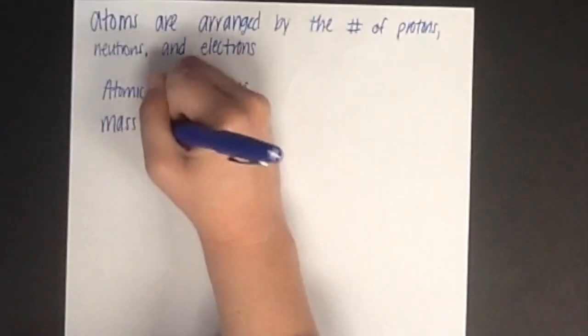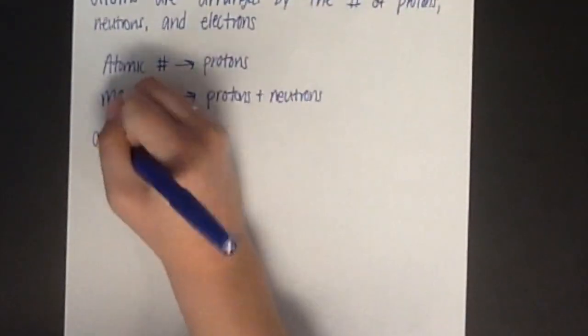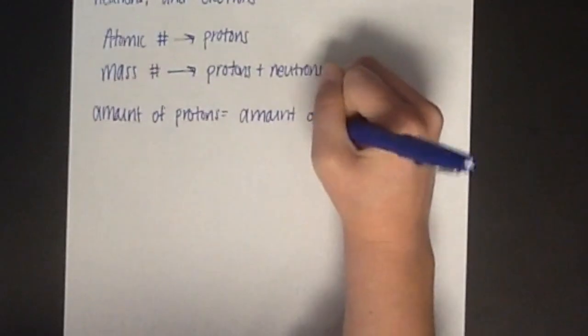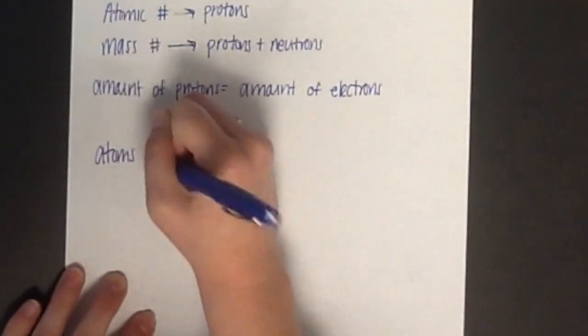The number of protons equals the number of electrons. A general notation for an atom of an element is shown by the element symbol, the mass number (A), and the atomic number (Z). An example of this is carbon.